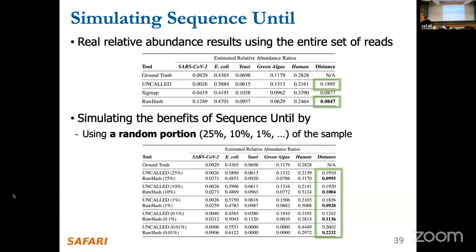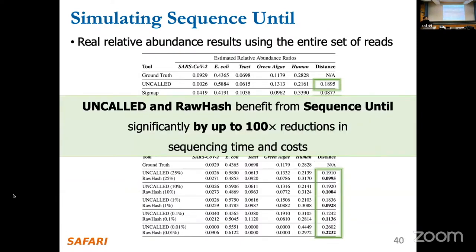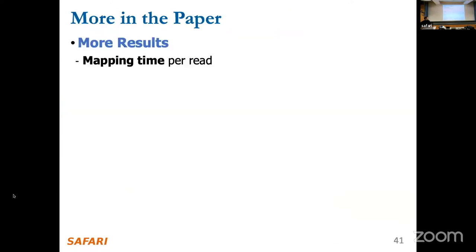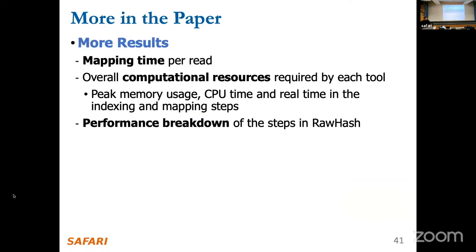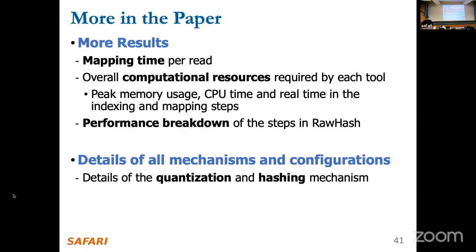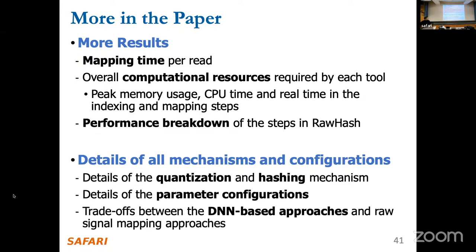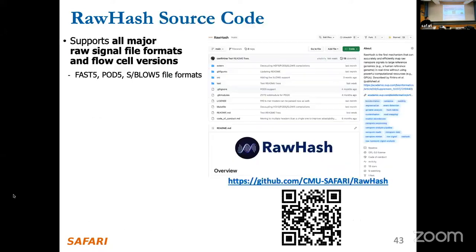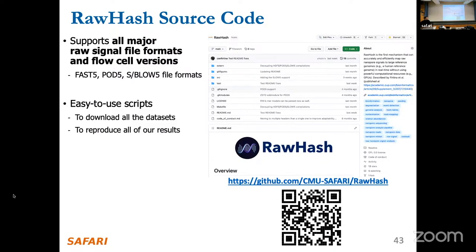There are some simulated benefits for other tools as well — see the paper for details. We also show more results in the paper, including performance breakdown, mapping time per read, details of quantization, and other configurations that couldn't be covered today. The RawHash source code is available and is easy to install and use, with a modular structure that allows improvements.